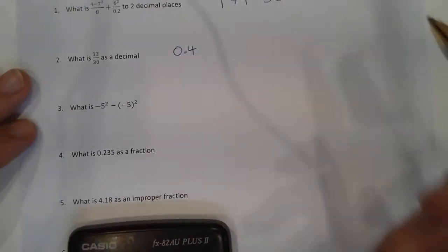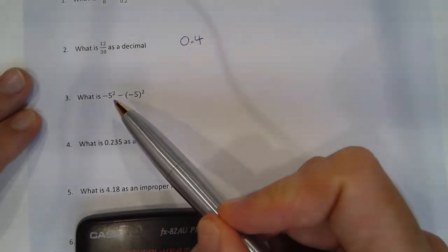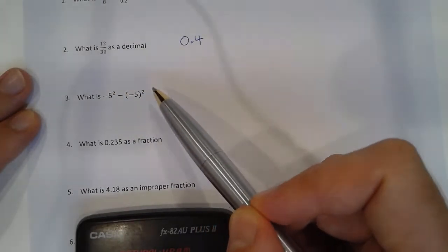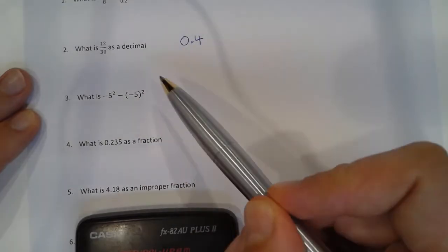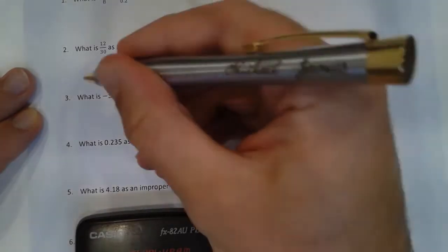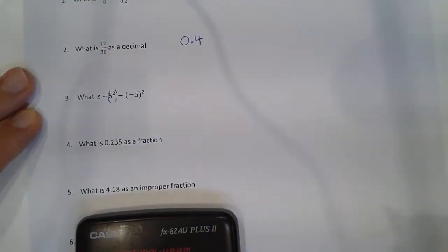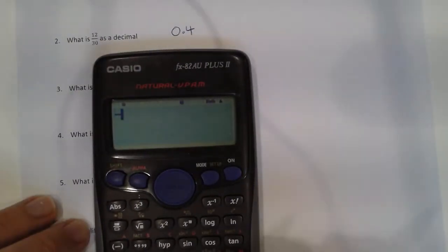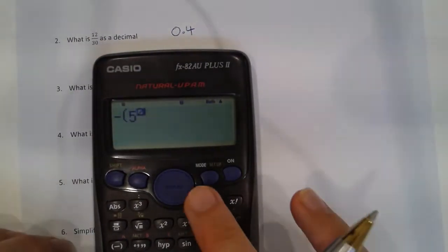Right. Number 3. What is minus 5 squared, take away minus 5 squared. So you really need to be careful how you input this into your calculator. So it's minus the 5 squared. So if we did that, it would be minus 5 squared, brackets.